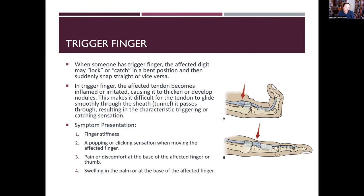Trigger finger occurs when the affected digit locks or catches in a bent position and then suddenly snaps straight. The affected tendon becomes inflamed or irritated, developing nodules that make it difficult to glide through the sheath. Symptoms include finger stiffness, popping or clicking, pain at the base of the affected finger or thumb, and swelling in the palm at the base of the affected finger.